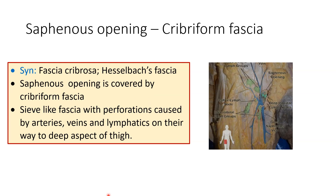Now let us see what the cribriform fascia is. The cribriform fascia is also known as fascia cribrosa or Hasselbach's fascia. The saphenous opening is covered by a sieve-like fascia with perforations in it — that fascia is called the cribriform fascia. These perforations are caused by arteries, veins, and lymphatics on their way to the deep aspect of the thigh. So the cribriform fascia is a sieve-like fascia perforated by arteries, veins, and lymphatics, and it covers the saphenous opening.